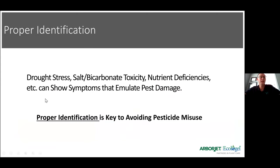Proper identification is critical. Is it drought stress? Is it salt or bicarbonate toxicity? Nutrient deficiencies? These all show symptoms that emulate pest damage. Proper identification is the key to avoiding pesticide misuse. We increase pesticide use in two ways: first, we misdiagnose and put a pesticide out when there isn't actually a pest problem. We always want to consider all other factors before reaching for fungicides, insecticides, etc.